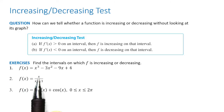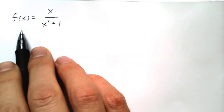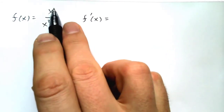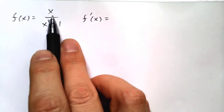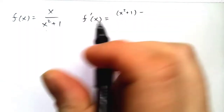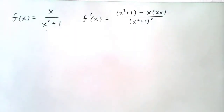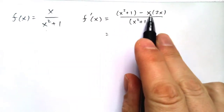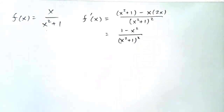Let's look at the next example: f of x equals x over x squared plus 1. We want to know where this function is increasing or decreasing, so we need to compute the derivative using the quotient rule. Take the bottom times the derivative of the top, minus the top times the derivative of the bottom, all over the bottom squared. Simplifying: x squared minus 2x squared gives negative x squared, so the numerator is 1 minus x squared, and the denominator is x squared plus 1, all squared.